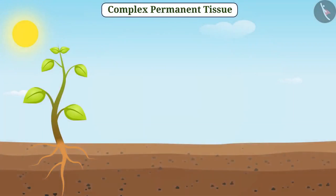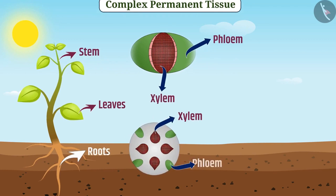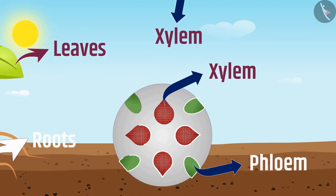In the vascular bundle of stem and leaves, xylem is present in the center and phloem is present on the outer side of xylem. In roots, xylem and phloem are present in alternate ways.